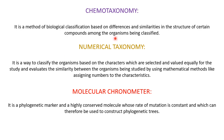Then comes chemotaxonomy. It is a method of biological classification based on differences and similarities in the structure of certain compounds being studied among two classified organisms. For example, if a particular protein is produced by two organisms, you apply chemotaxonomy — biological classification based on the differences and similarities in that particular compound.